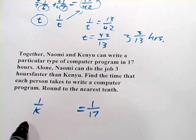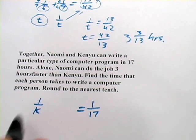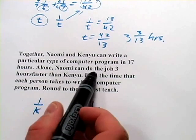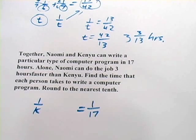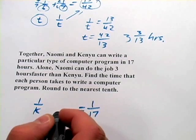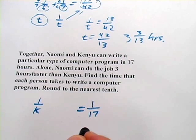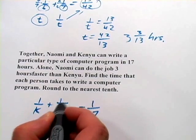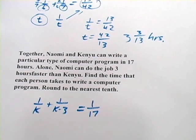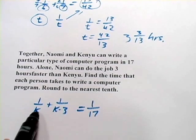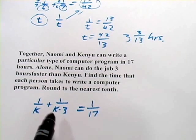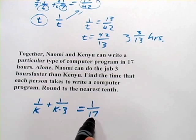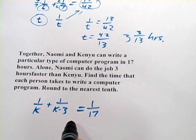And that means that K will be the total amount of time it takes her to get the job done, which is one of the things we're looking for. It says Naomi can do the job three hours faster than Kenyu, so it takes her three hours less. So the amount of time that Naomi takes to do the job would be K minus three. So her hourly rate is one over K minus three. So now we have Kenyu's rate plus Naomi's rate equals the hourly rate to get the whole job done when they're working together. We have all we need now to solve for K.